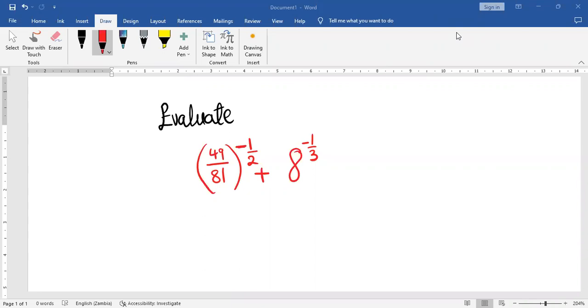Welcome guys, so we have this question that we are supposed to evaluate here. Let's see how we can evaluate this question. We can start with this part here. The first thing that we are supposed to start with is to get rid of this negative sign on the index by